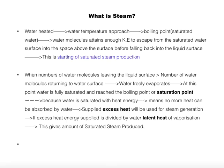Now, what is steam? When we heat water, the water temperature starts increasing and approaches the boiling point, which is called the saturation temperature of water. Water molecules gain enough kinetic energy to escape from the saturated water surface into the space above, before falling back into the liquid surface. When this happens, this is the start of saturated steam production.